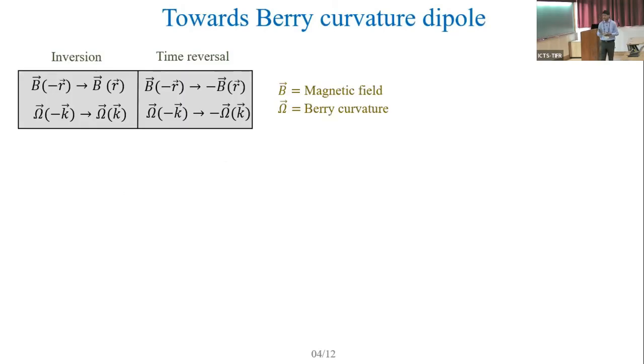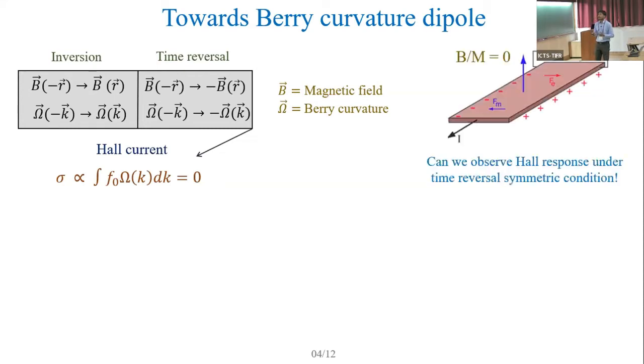Berry curvature in K-space is similar to the magnetic field in real space. When we talk about time reversal symmetry condition, it is an odd function. Since this is an odd function, if we take the integration of this function all over the Brillouin zone, we will get a zero value. This is why we do not get any Hall conduction when we talk about time reversal symmetric conditions. The question has been asked at a fundamental level: can we observe Hall response when we are in the time reversal symmetric condition?